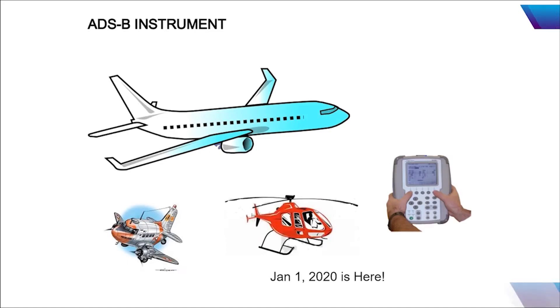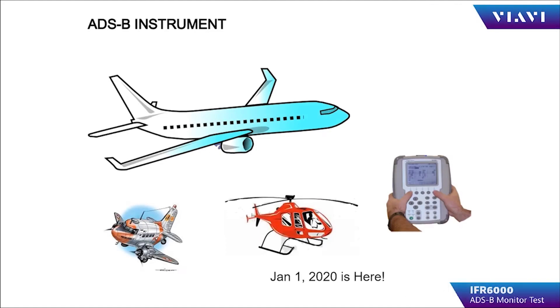January 1, 2020 is here and ADS-B is mandatory for all aircraft that fly in controlled airspace. Are your aircraft ready to fly?